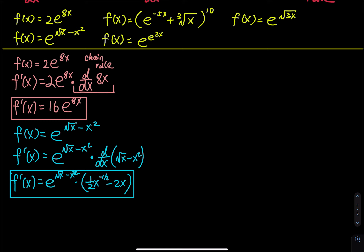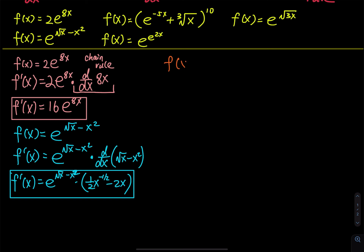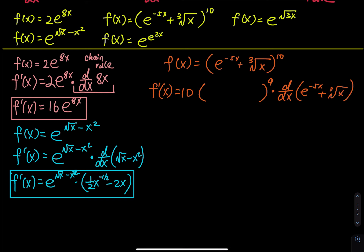The next example has a 10th power, so clearly we'll need the chain rule again. We have f(x) = (e^(−5x) + ∛x)^10. To find f′(x), bring the 10 down first, leaving whatever is inside raised to the 9th power, and then use the chain rule to take the derivative of the inside: e^(−5x) + ∛x.